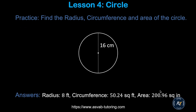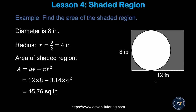This is a practice problem — pause the video and try by yourself. Make sure you get radius equals 8, circumference equals 50.24, and area equals 200.96 square inches.